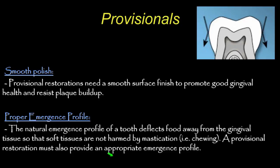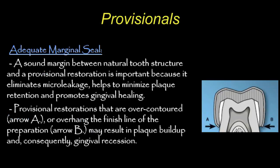You want a nice smooth polish for good tissue and gingival health, resistant to plaque formation. Emergence profiles are important to deflect food away from tissue and prevent harm during healing. A nice marginal seal prevents sensitivity, protects the pulp, and reduces gingival irritation. A really bulky or over-contoured crown is not good — it creates a big overhang, plaque buildup, and with long-term provisionals or implants, can cause recession.